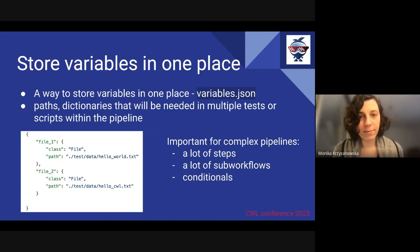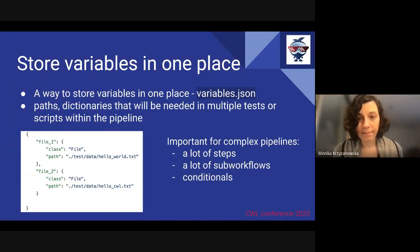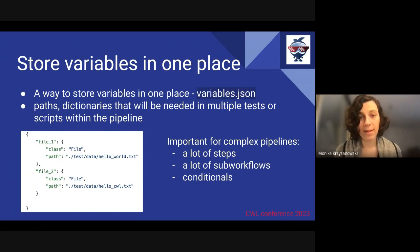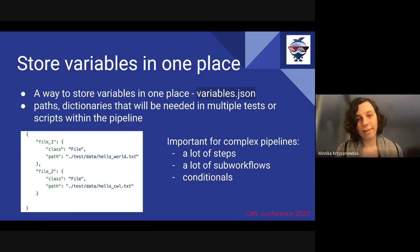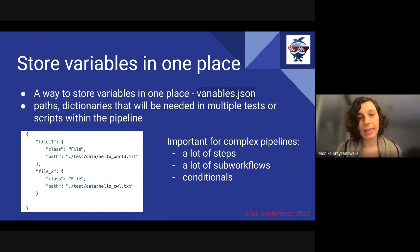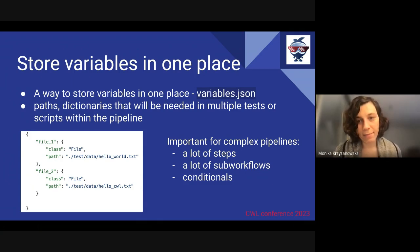Our library provides a way to store variables in a separate file called variables.json. This file contains paths and dictionaries that may be needed in multiple tests or scripts within a pipeline. When executing tests, Arvados CWL Tester imports relevant variables from variables.json into the script, eliminating the need to repeat them in multiple places. This not only saves time and effort but also helps prevent errors.